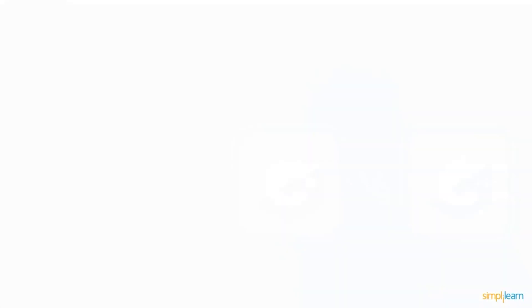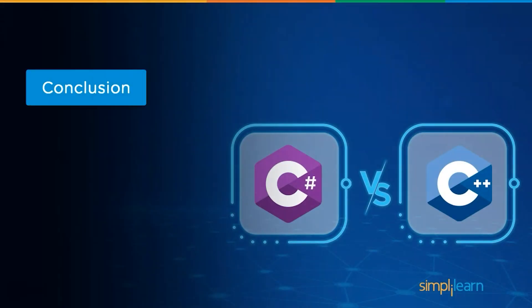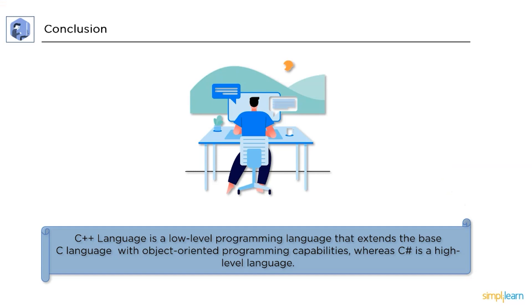Finally, let's look at the conclusion for this session. First up, C++ language is a low level programming language that extends the base C language with object oriented programming capabilities. Whereas, C Sharp is a high level language.